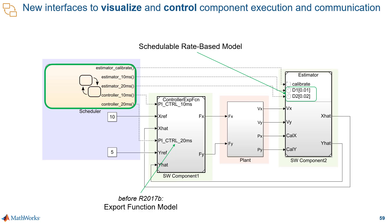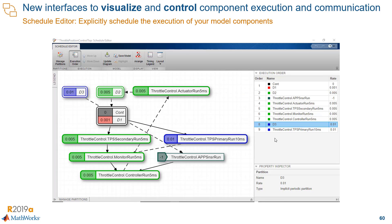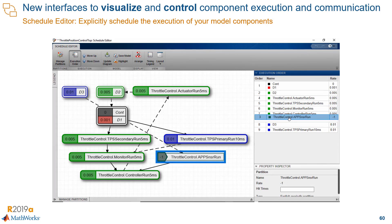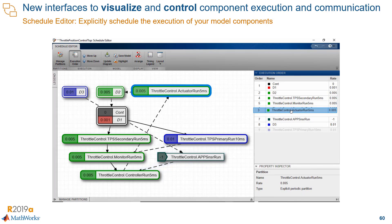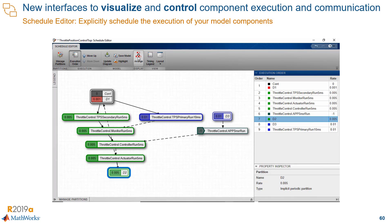We've seen new ways to model software components and new ways to simplify the integration of those software components. Now let's talk about visualization and control. We know that we can schedule components in rate-based models with a Stateflow chart, but what if you have to schedule 100 or maybe 500 components? That's where the Schedule Editor is really valuable, because it helps you manage that scheduling process. You can now visualize in a single interface different model partitions and their relationships for execution, and more importantly, you can control and change those relationships and the order. This is true for both export function modeling style and rate-based modeling style.